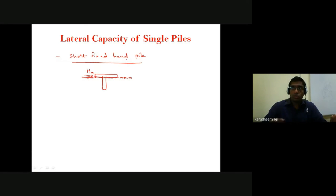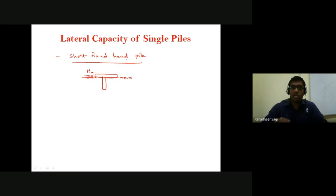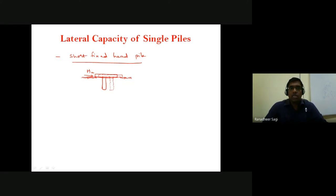In the case of long fixed head piles, though the pile tries to get translated, because of failure in the pile material — that is, plastic hinge formation at some particular point along the length of the pile — rotation happens in the top portion of the pile about that plastic hinge. But what we are looking at here is a short fixed head pile, where the pile undergoes translation displacement due to the lateral load.